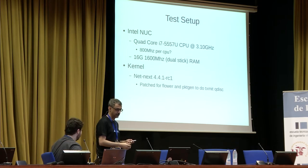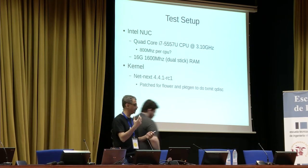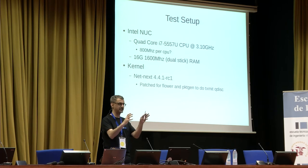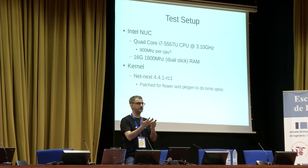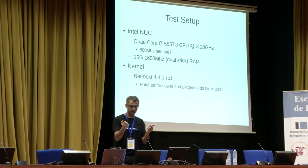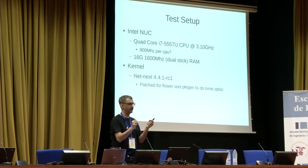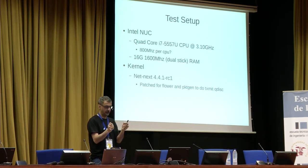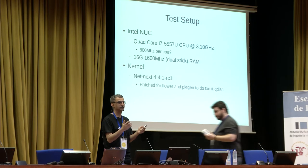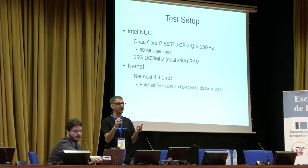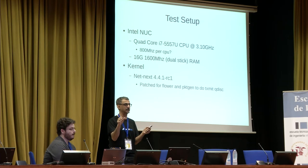We picked an Intel NUC — an i7 quad core, 3.1 GHz. We bought the fastest RAM we could find: 16 GB of 1600 MHz. The kernel we picked at that point was net-next 4.4.1 RC1. There were some issues with Flower, and we had to patch packet gen to not bypass the egress QDisc. That's our test setup.